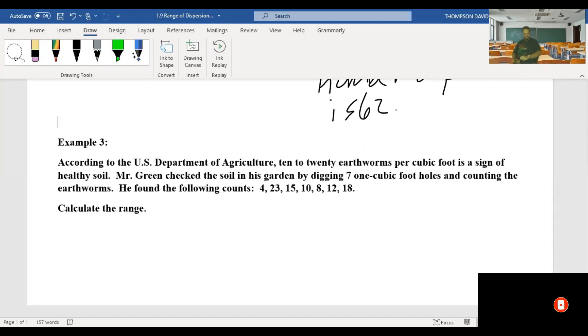Example three. According to the U.S. Department of Agriculture, 10 to 20 earthworms per cubic foot is a sign of healthy soil. Mr. Green checked the soil in his garden by digging seven one-cubic-foot holes and counting the earthworms. He found the following counts.